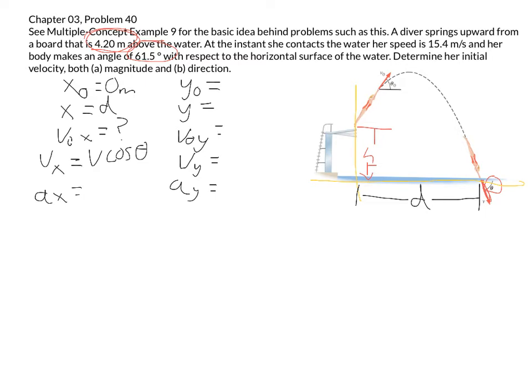If we look over here at our velocity, this would be our x component, this would be our y component, and this would be our hypotenuse. So our x component would be the cosine.